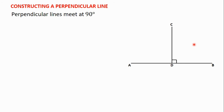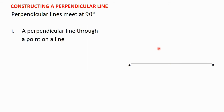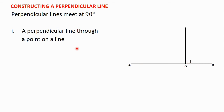In this video and the next one, we are going to learn how to draw a line perpendicular to another line under two conditions. The first condition is how to draw a perpendicular line through a point on the line. So if we have line AB and point G on it, we will learn how to draw a line through point G such that it and line AB are perpendicular, meaning the angle between them is 90 degrees.